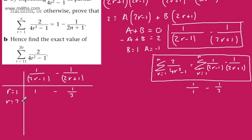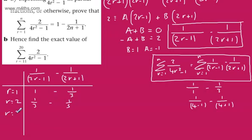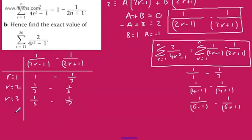When r equals 3, we have 1 over 6 minus 1, then minus 1 over 6 plus 1, giving us 1 over 5 minus 1 over 7. You can quite clearly see what the pattern is going to do from there onwards.